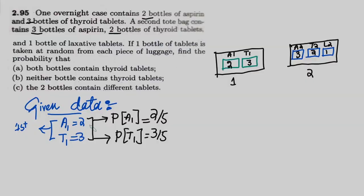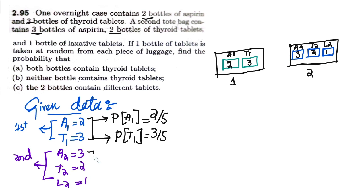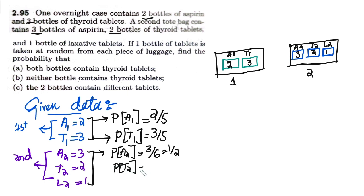For the second bag: A2 equals three, T2 equals two, and L2 equals one. The probability of A2 is three divided by the total — three plus two plus one equals six — so P(A2) equals 3/6 which is 1/2. Similarly, P(T2) equals 2/6 which is 1/3, and P(L2) equals 1/6.